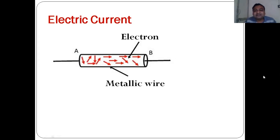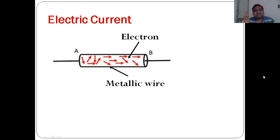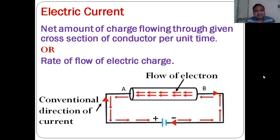So what is electric current, and what is required to produce it? Electric charge is of three types: positive charge (proton), negative charge (electron), and neutral (neutron). The definition of electric current is: the net amount of charge flowing through a given cross section of a conductor per unit time is called electric current.